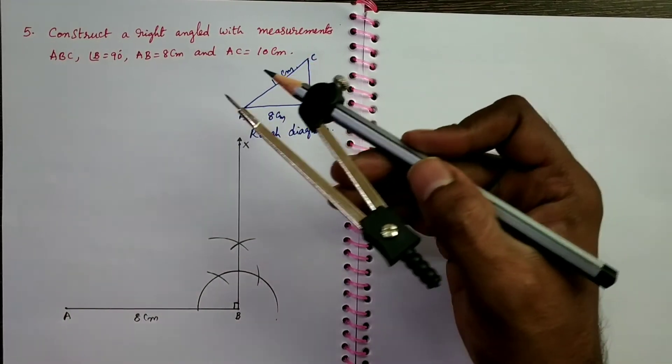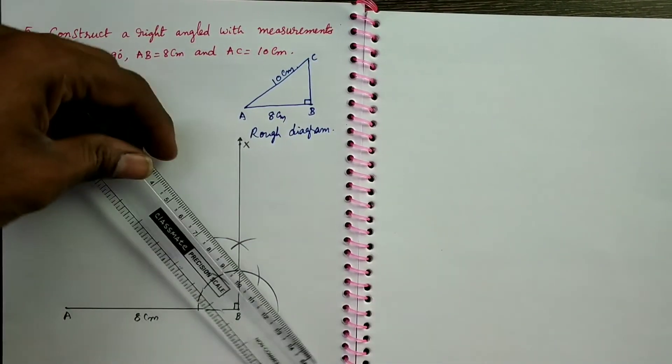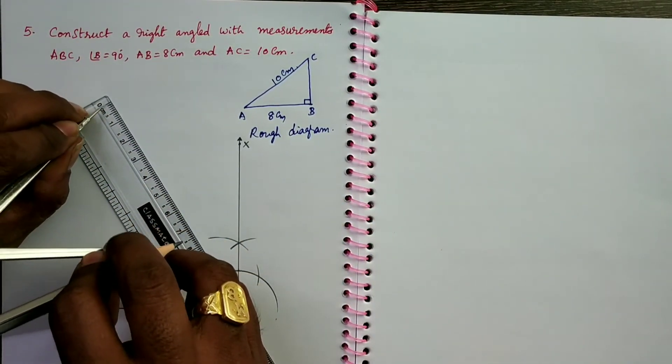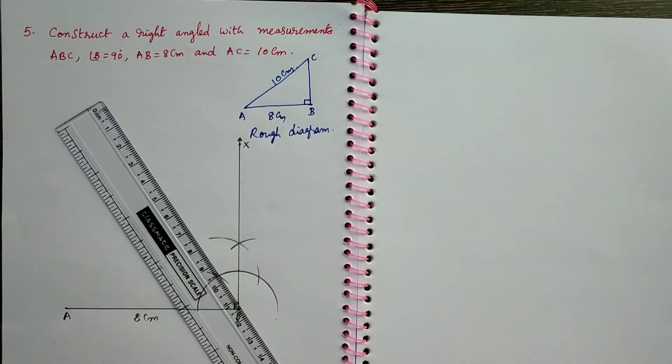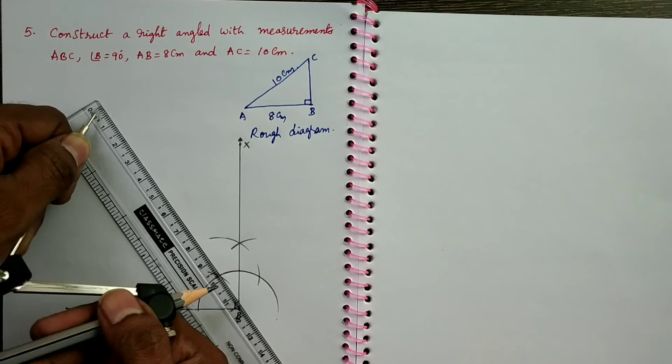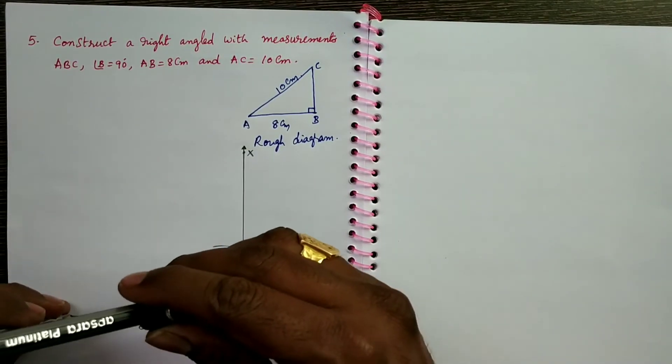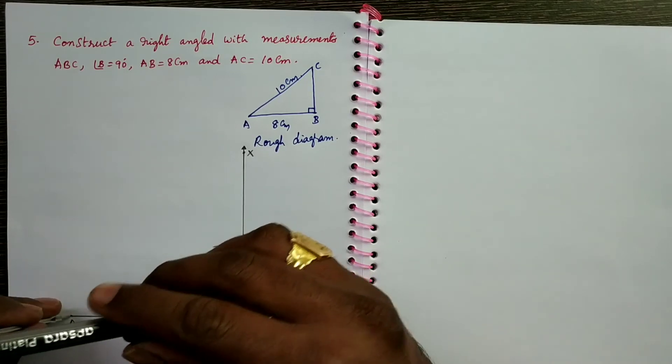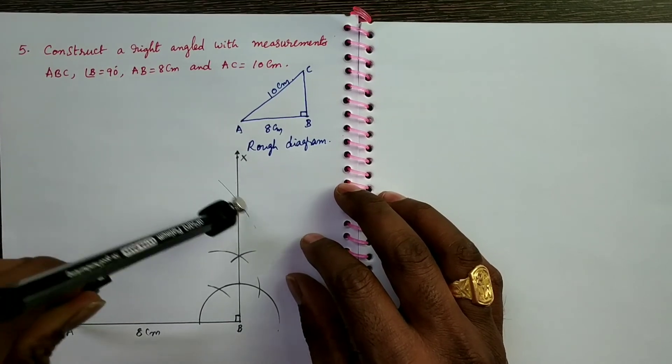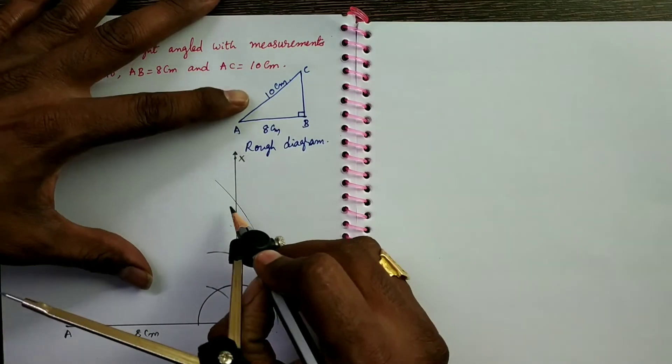Next given measurement is AC equals 10 cm. So take a scale. Keep compass point on 0, pencil point on 10 like this. Take A as center, this 10 cm as radius. Draw an arc. It intersects the ray BX at C.